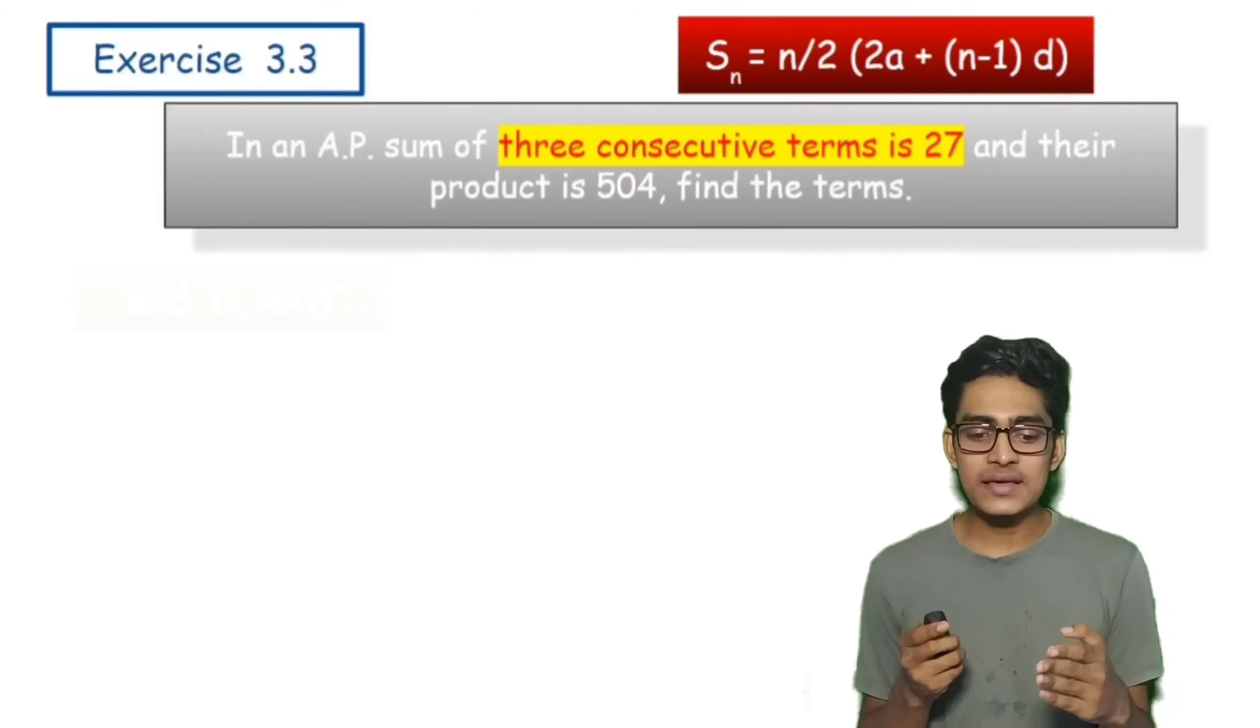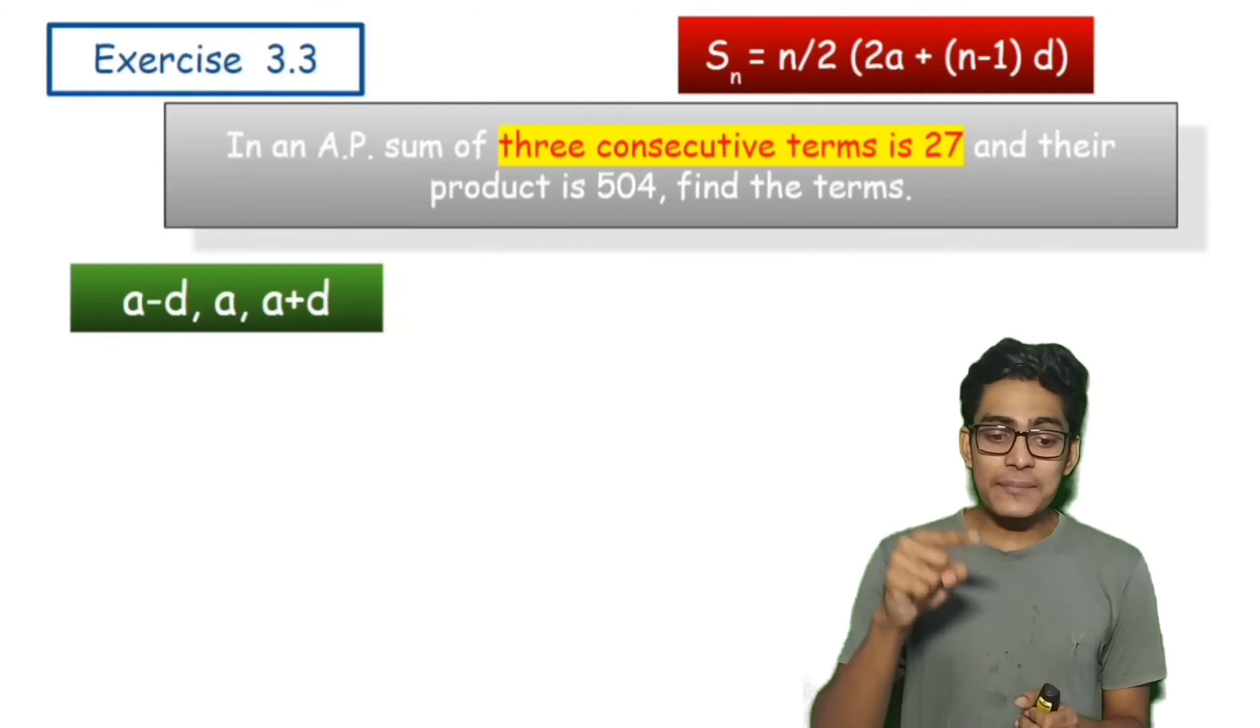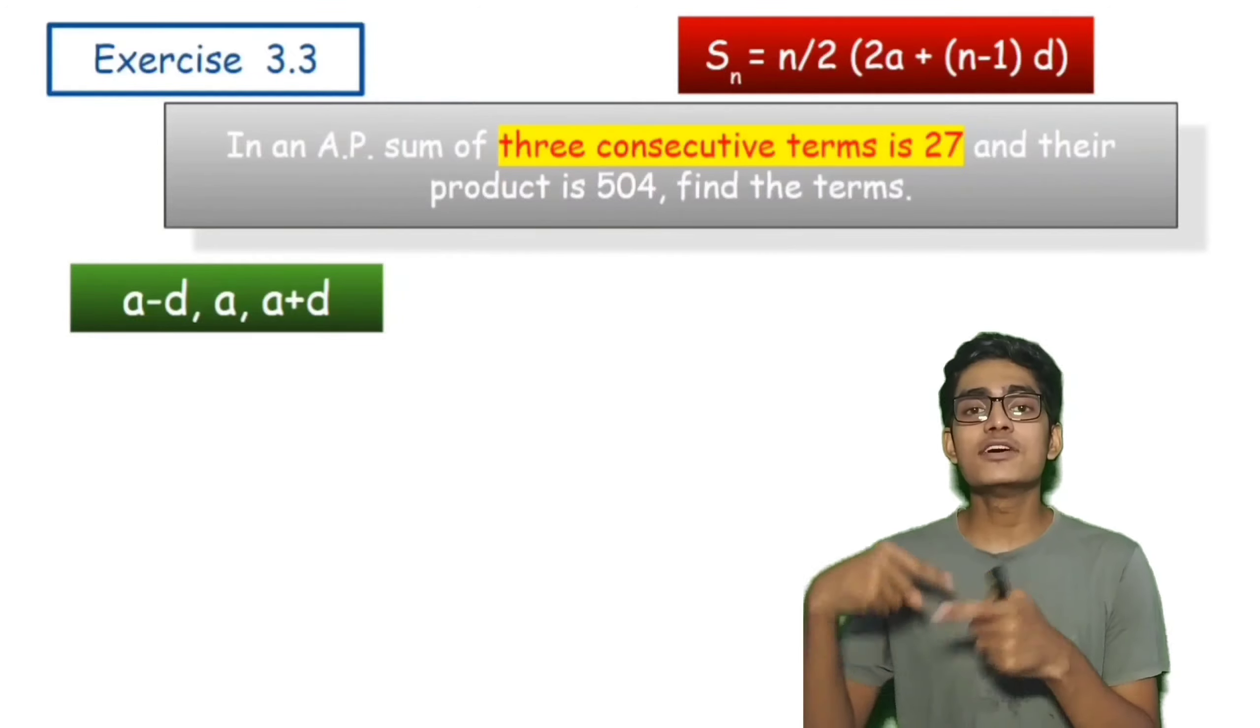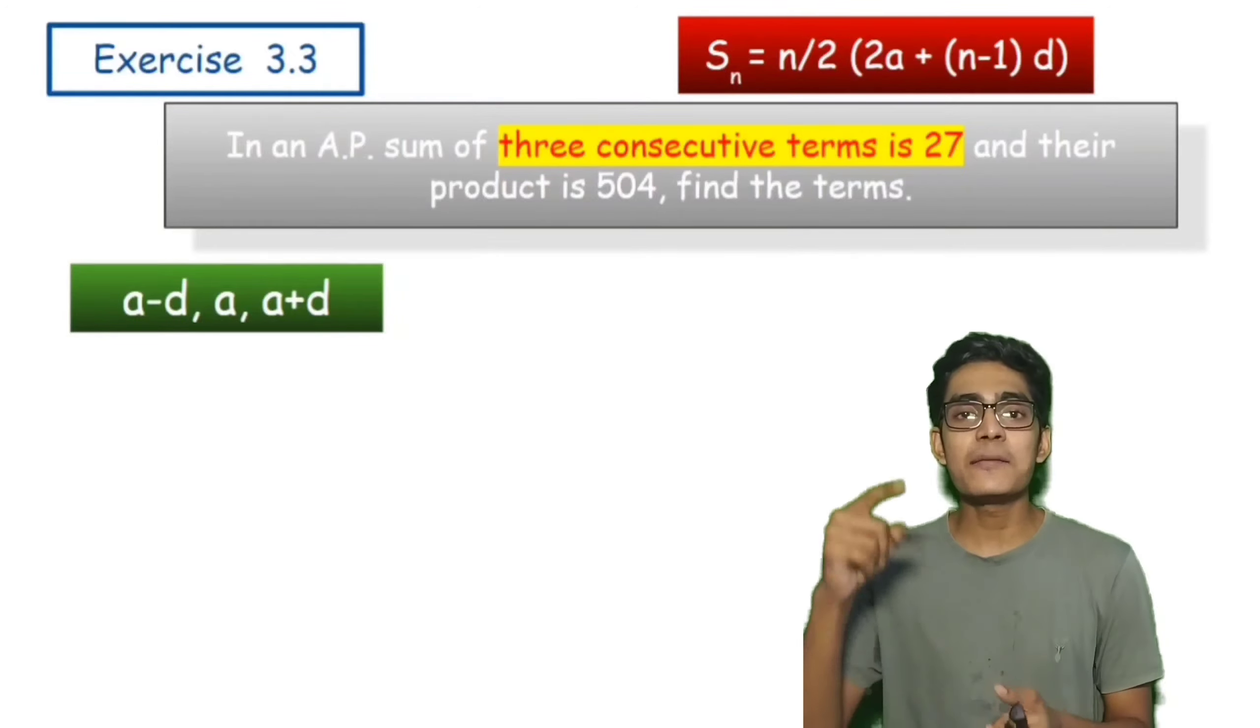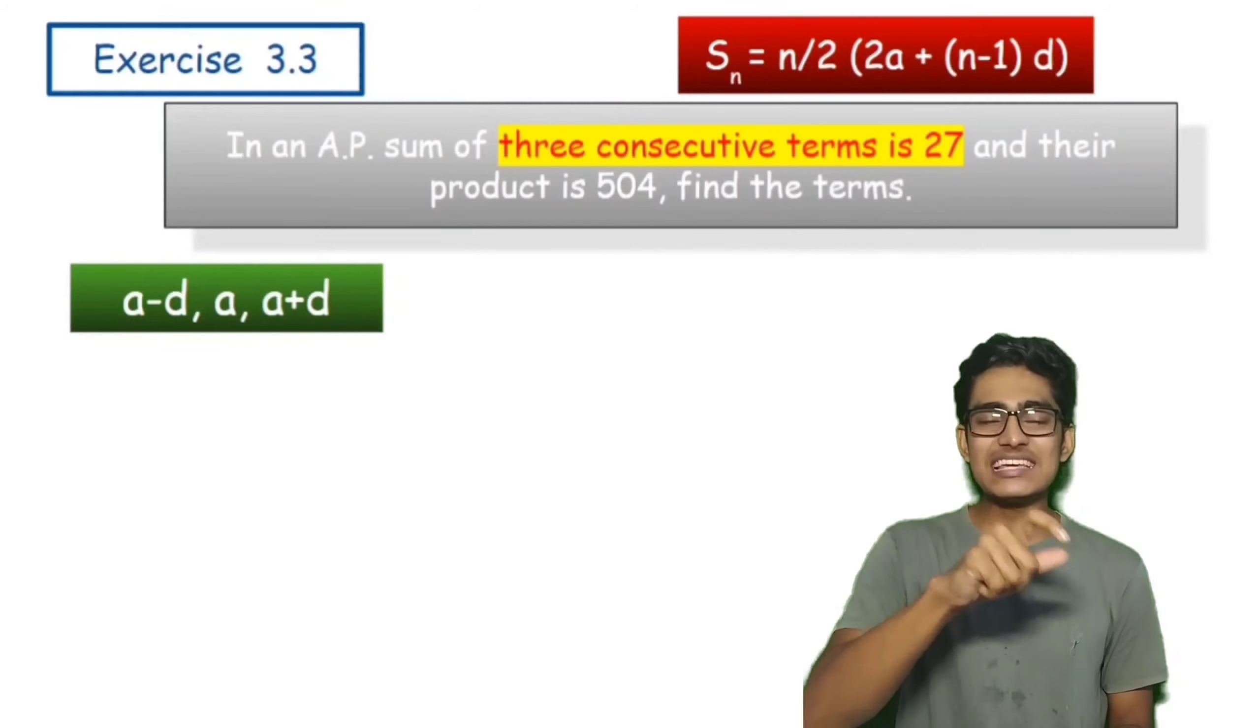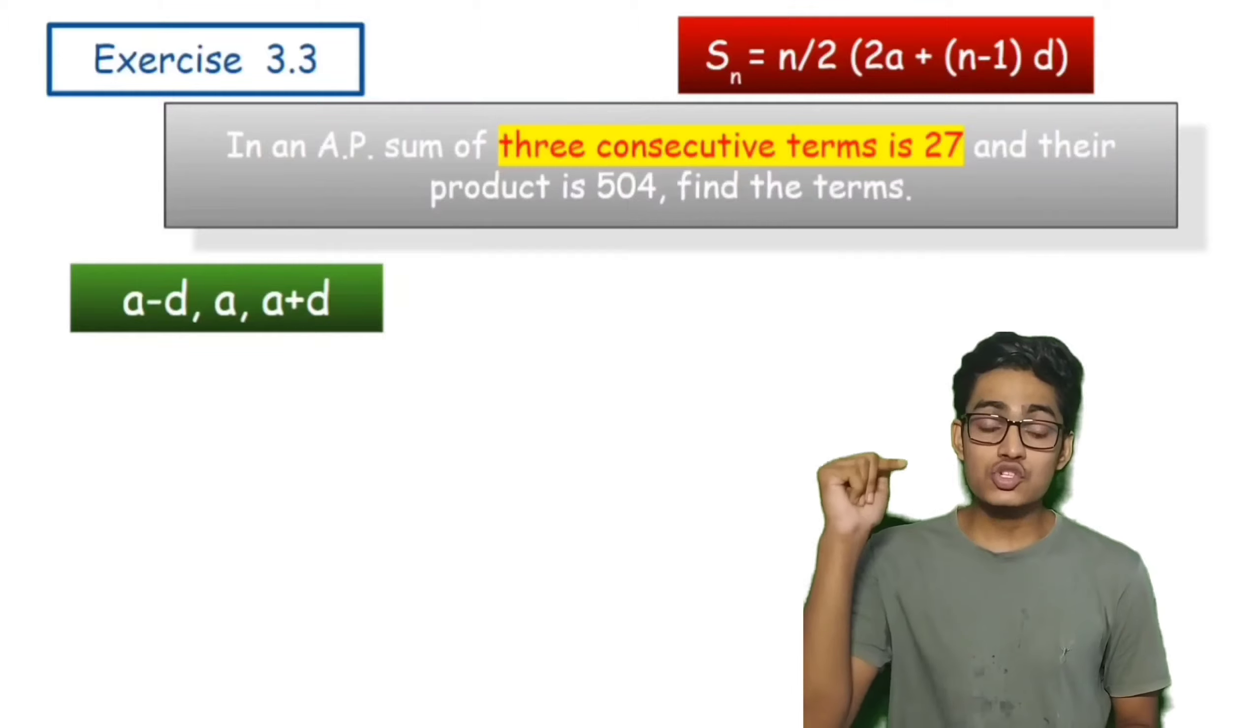So what do I mean? I mean that a minus d will be before and after, that is after the sequence, what happens? Plus plus happens d. So a + d, so these are the three consecutive terms which we have given.